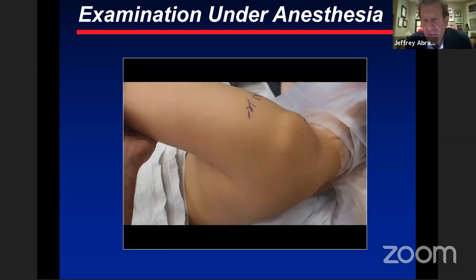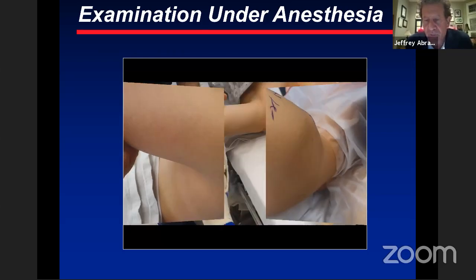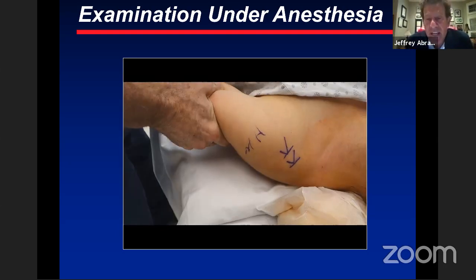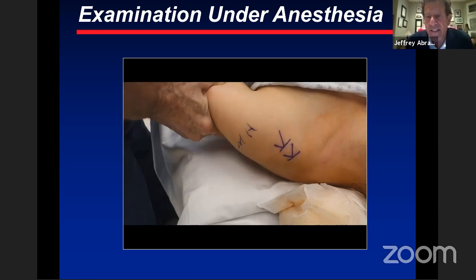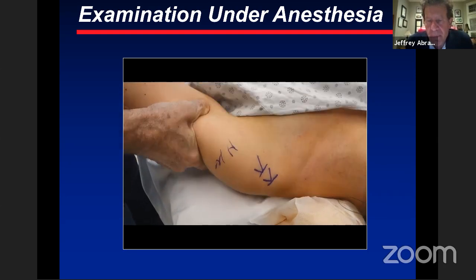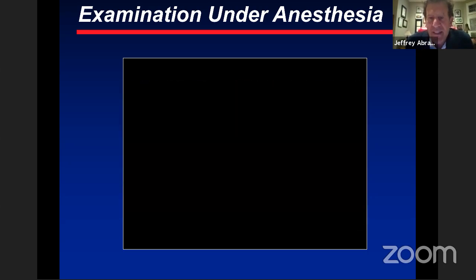Before positioning the patient under anesthesia, I like to see the sulcus sign and assess range of motion and humeral head translation, trying to grade the system. A little instability means a little surgery; big instability means big surgery. Right at this moment I'm making decisions on how much tissue to plicate. Combined with my intraoperative diagnosis, this tells me whether to take small or large bites with the suture hook to create stability.